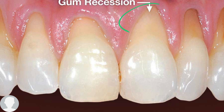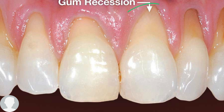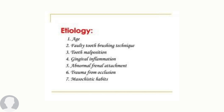This is what we mean by gum recession. Miller classified four types of receding gums, and we will speak about them in detail. But first, let's discuss the etiology — what is the cause behind receding gums.